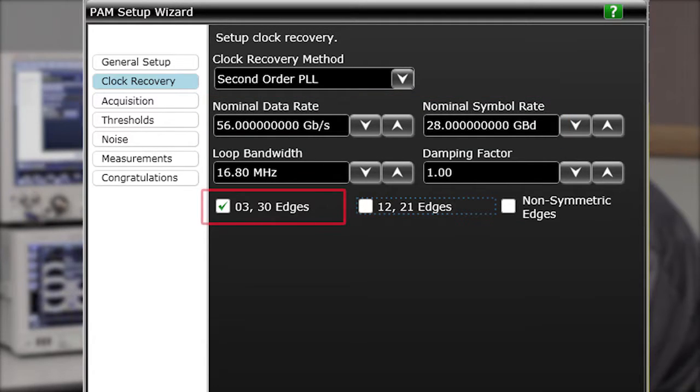The next thing is we have to select what edges of the PAM-4 signal we want to use in our clock recovery. Now this can be very important because sometimes due to the distortion of the signal, if you're transmitting this signal through a channel, it can be difficult for the clock recovery mechanism to differentiate between the inner transitions of the 1-2 to 2-1 transitions. So we're going to disable those and just focus on syncing our clock to the 0-3 to 3-0 edges. So this is a very powerful capability in our clock recovery tool that allows us to deal with essentially very stressed signals and still be able to make measurements on them.